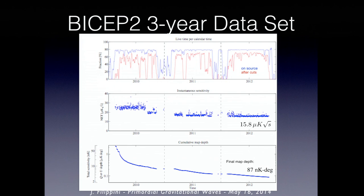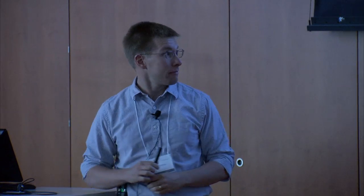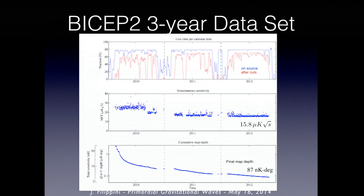We've observed for three years — 2010, 2011, and 2012 — before the instrument was decommissioned. About 60% of the time on sky passed all quality cuts. The noise equivalent temperature of the instrument is about 16 microkelvin root-seconds, meaning in about one second you can observe a difference in sky temperature of order 16 microkelvin. The final map depth when you drill down into that region of sky is an RMS of 87 nanokelvin on a degree pixel.